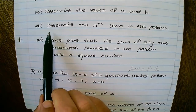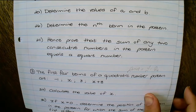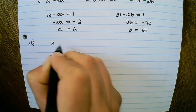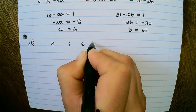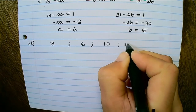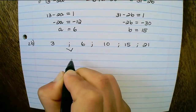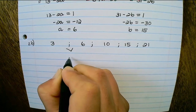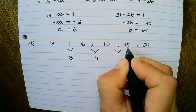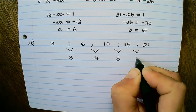The next question asks us to determine the nth term. Now that we have a equals 6 and b equals 15, the pattern is 3, 6, 10, 15, 21. The first differences are: 6 minus 3 equals 3, 10 minus 6 equals 4, 15 minus 10 equals 5, and 21 minus 15 equals 6.